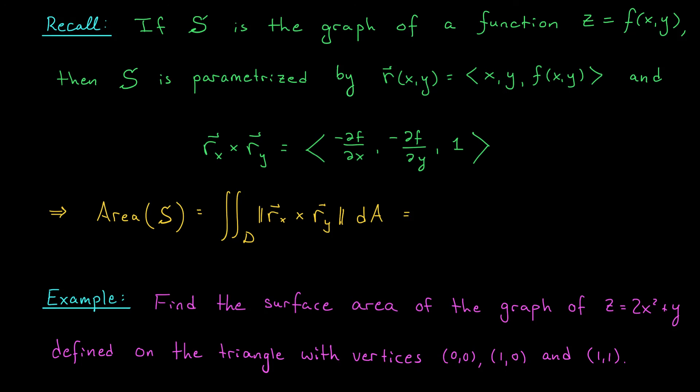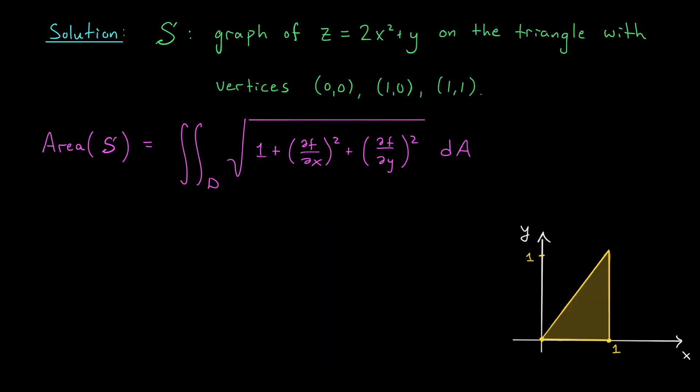So, let's try an example. Let's see if we can find the surface area of the graph of this function, z equals 2x squared plus y, over the triangle with vertices (0, 0), (1, 0), and (1, 1). Since we're looking for the surface area of the graph of a function, we can use our formula from the last slide. The surface area is given by the double integral of this expression here. We don't need to calculate any cross products. We just need to know the partial derivatives of our expression with respect to x and y. If you calculate those partial derivatives, you should get 4x and 1, respectively. So, this gives us a double integral of the square root of 2 plus 16x squared dA.